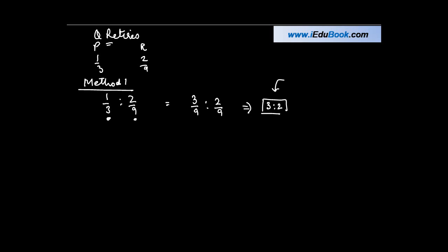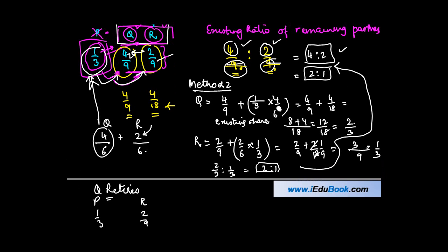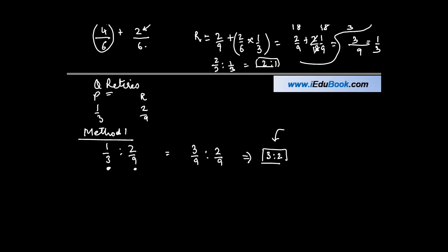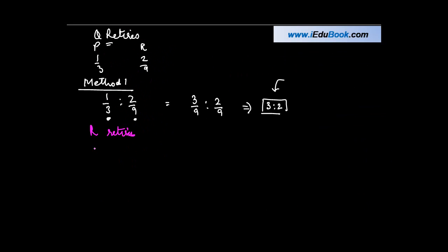How about if R retires? So 1/3 and 4/9 for P and Q. Again the denominators are different, so I convert this into common denominators: 3/9 : 4/9, or 3:4. Try solving these two by method second and verify at your own end if the result is the same.